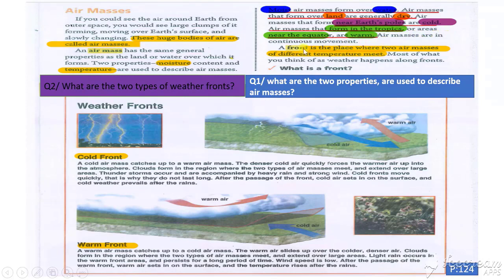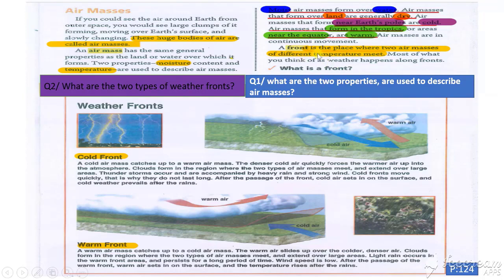Air masses are in continuous movement. But what is a front? A front is the place where two air masses of different temperature meet. Another definition: a front forms when two air masses meet. This is a very important subject. Please try to pay attention to these definitions: air mass and front.